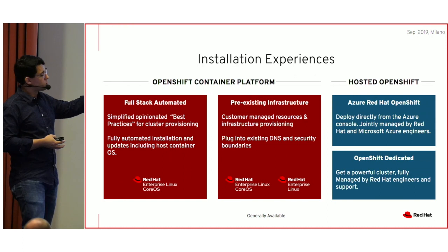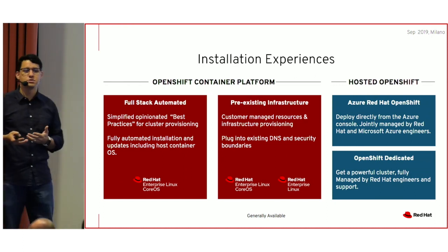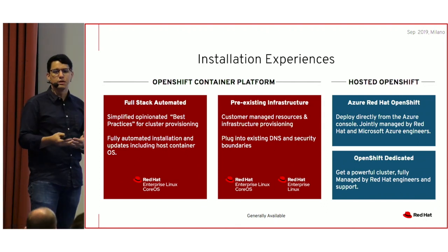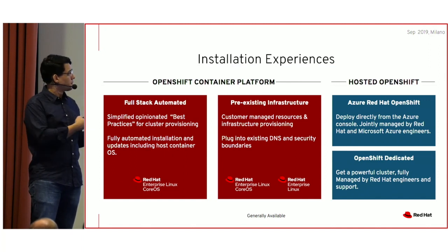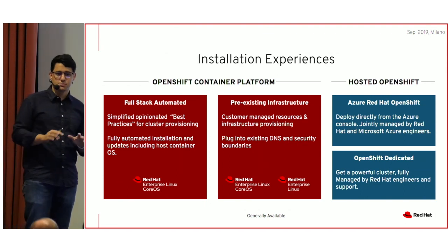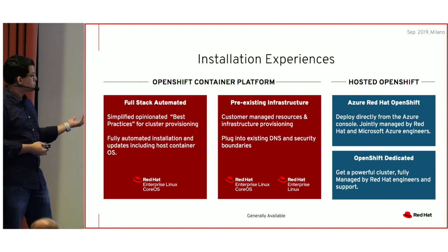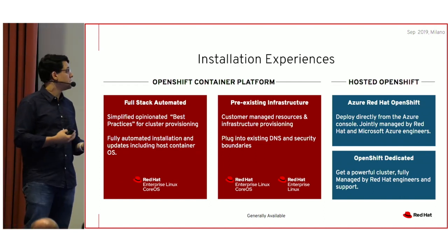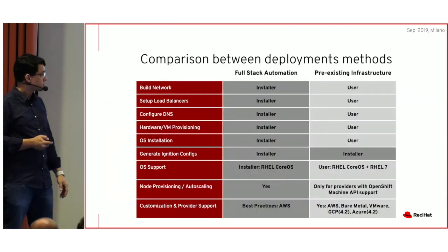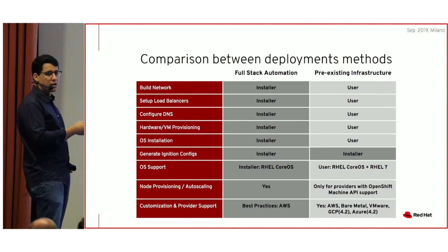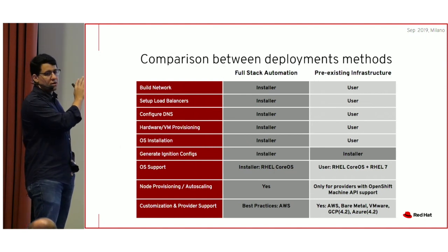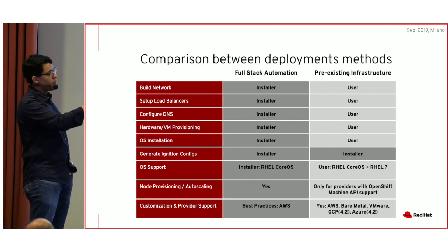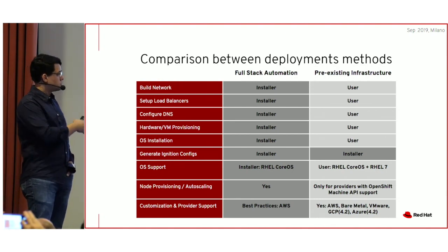One hosted flavor is ARO — Azure Red Hat OpenShift — where OpenShift is managed jointly by Red Hat and Microsoft engineers, and you can create a cluster directly from the Azure console. We also offer OpenShift Dedicated, where management is done by the Red Hat engineering team and our SREs. Putting UPI and IPI side by side, IPI is pretty much automated all the way, while UPI requires you to provide infrastructure, though the installer can still assist with things like generating ignition configuration.